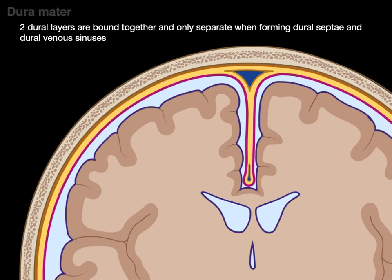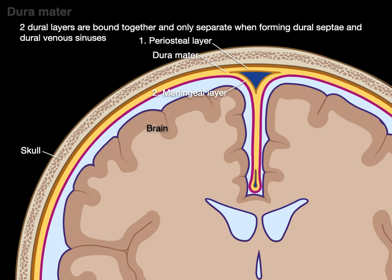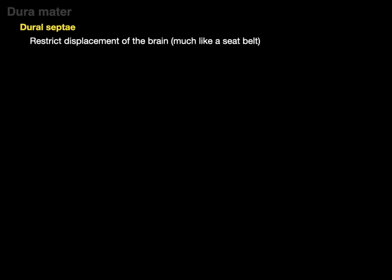In this coronal section we zoom in — there's the skull, lining that is the dura mater, and there's the brain. The dura mater has two layers the whole way; now they divide into a periosteal and a meningeal layer. When they divide, that's when you see the dural septae and the dural venous sinus. The dural septae restrict displacement of the brain, much like a seatbelt does for us when we're driving — it keeps the valuable things inside stable. Same with the dura mater keeping the brain stable within the skull.